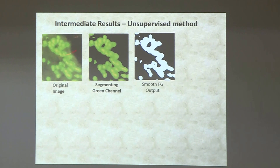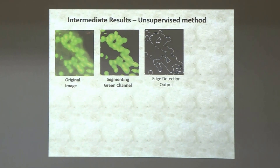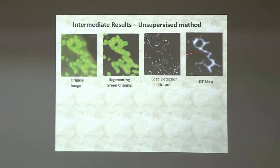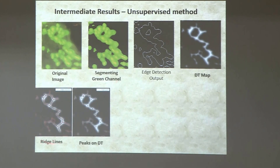After segmenting out the foreground, we need to detect the cells. We took the edge map — once you have the edge map, it gives a lot of information. We then computed the distance transform from the edge map, and from the distance transform we compute what are called ridge lines. The ridge map looks somewhat like terrain or even a blood vessel scan.